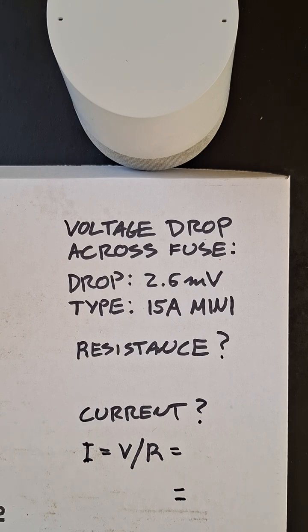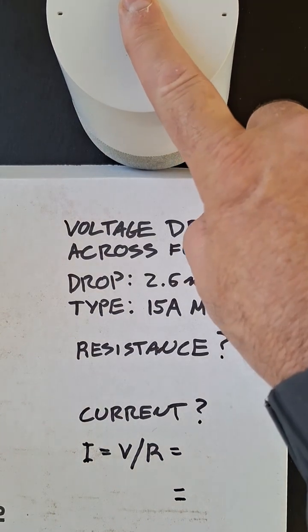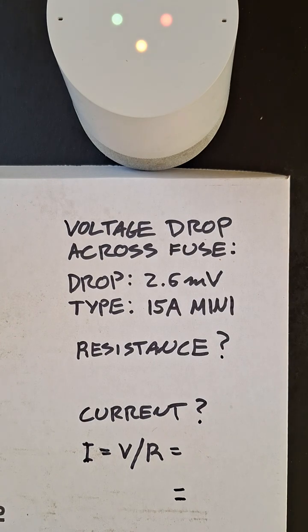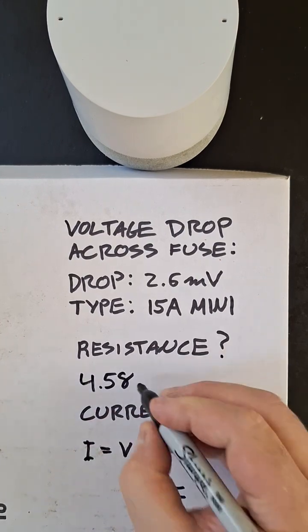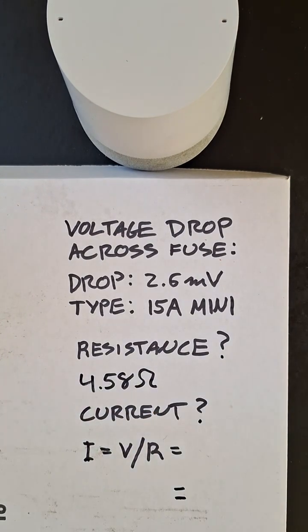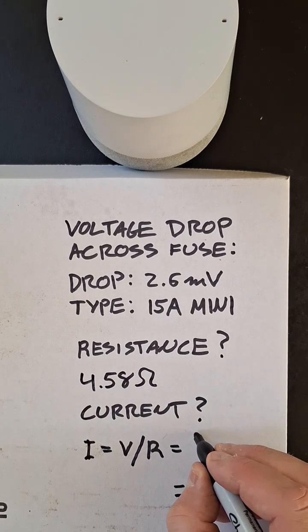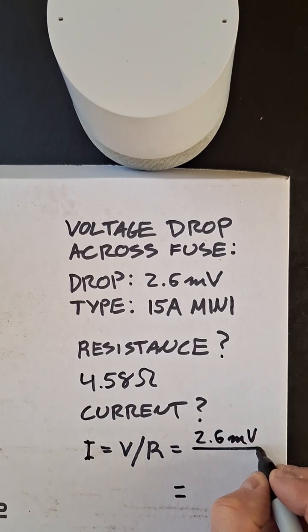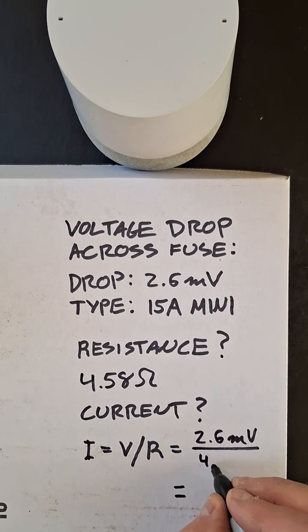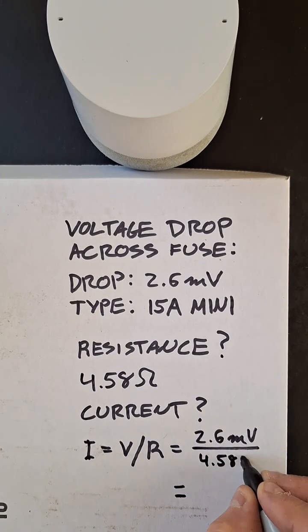It's a 15-amp mini fuse. What's the resistance of a 15-amp mini fuse? On the website worthusa.com, they say the cold resistance is 4.58 ohms. So now let's go ahead and plug in 2.6 millivolts and 4.58 ohms.